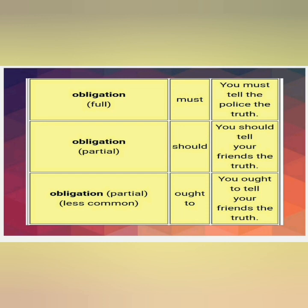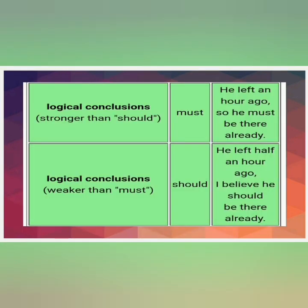For obligation: when fully obliged, use must — 'You must tell the police the truth.' For partial obligation, use should — 'You should tell your friends the truth.' For less partial obligation, use ought to — 'You ought to tell your friends the truth.' For logical conclusions stronger than should, use must — 'He left an hour ago, so he must be there already.' For weaker conclusions, use should — 'He left half an hour ago, I believe he should be there already.'